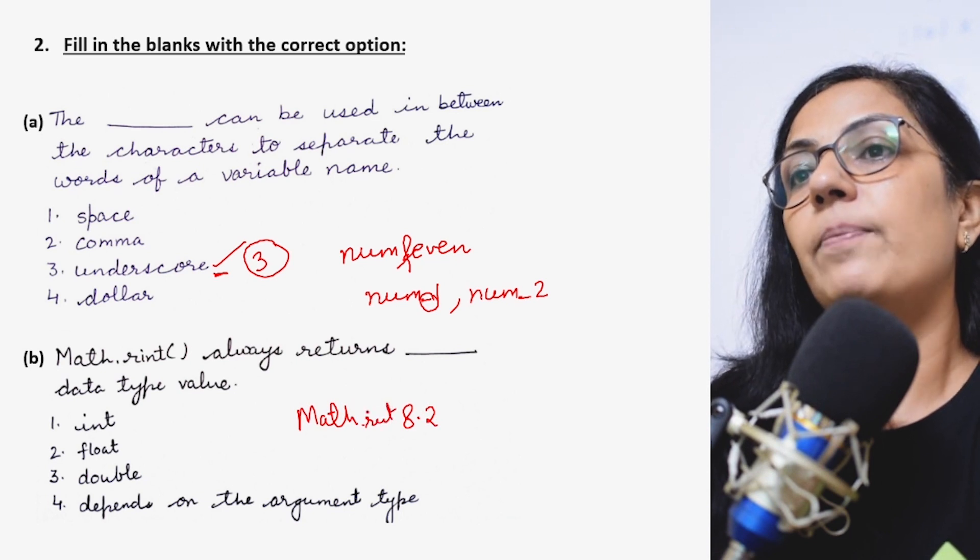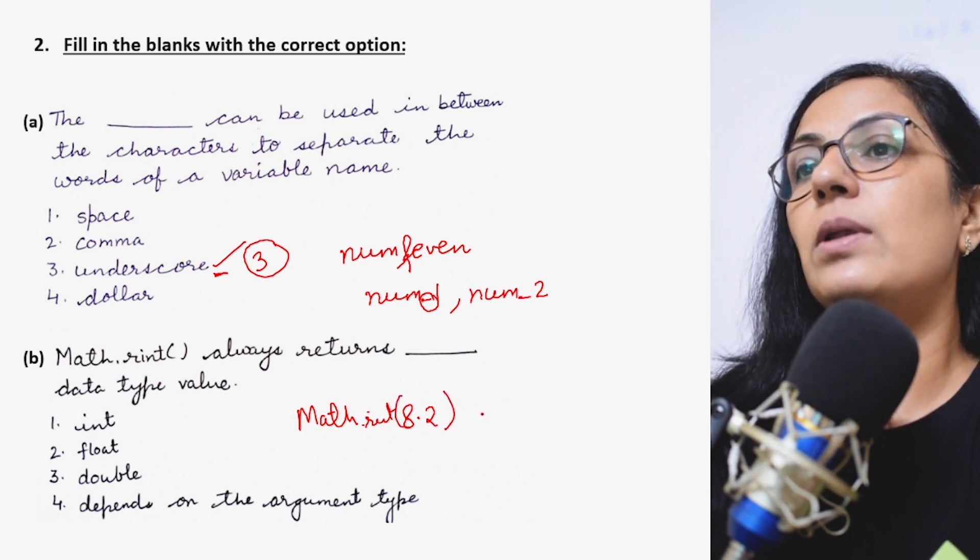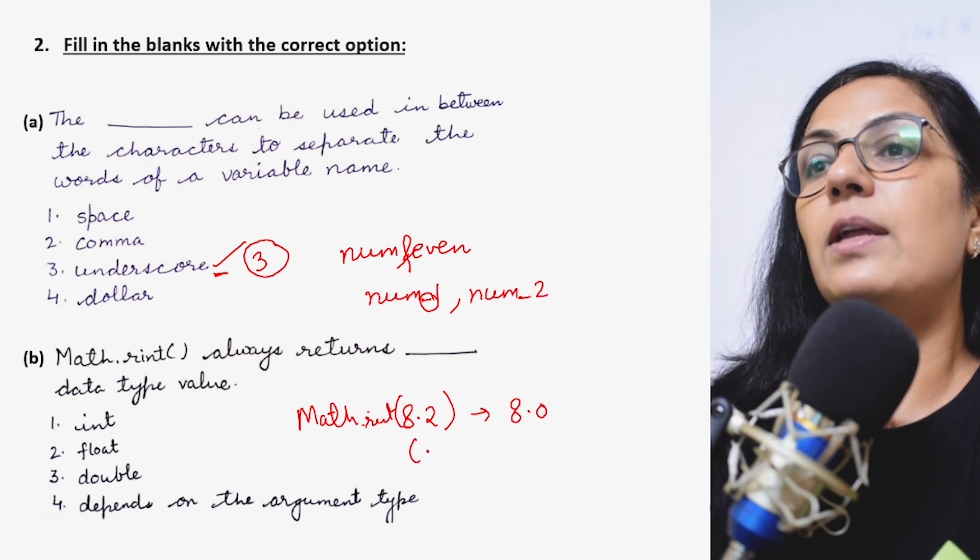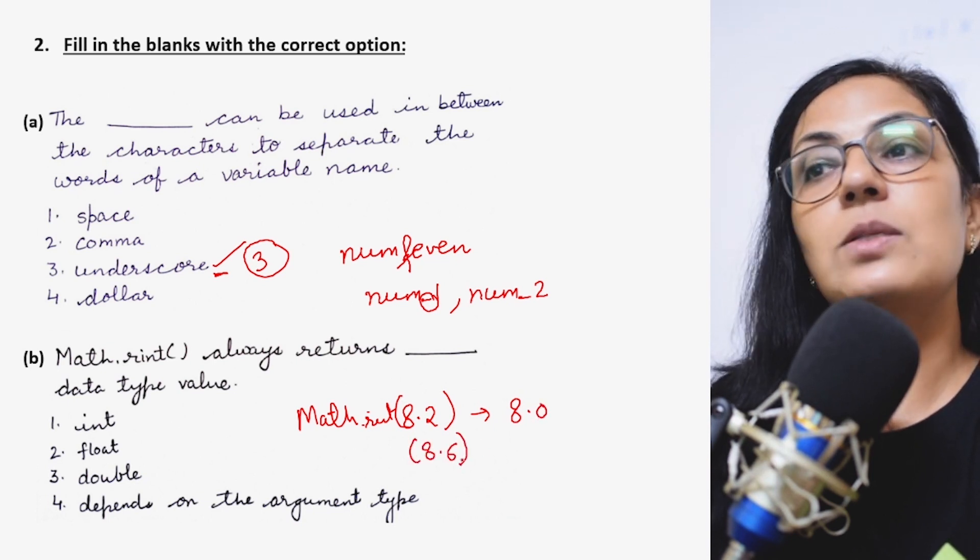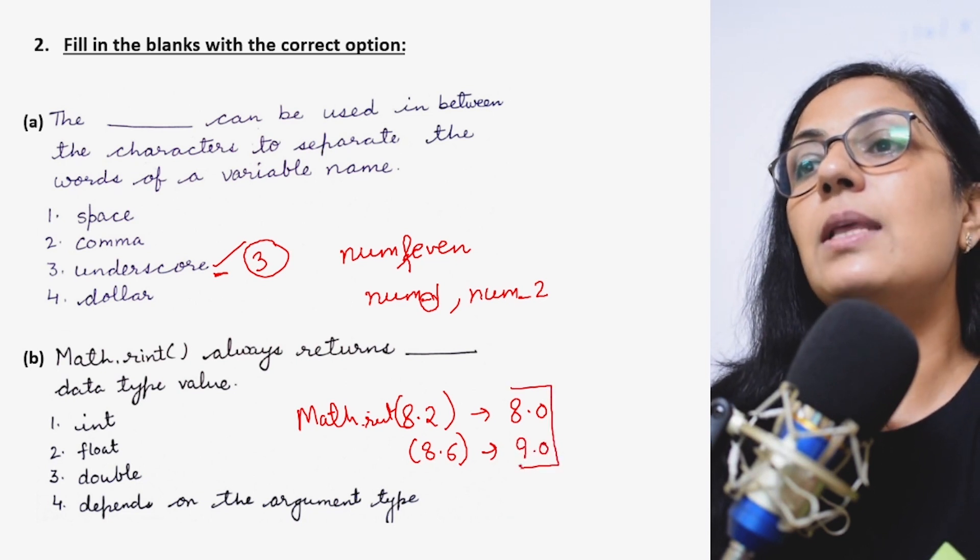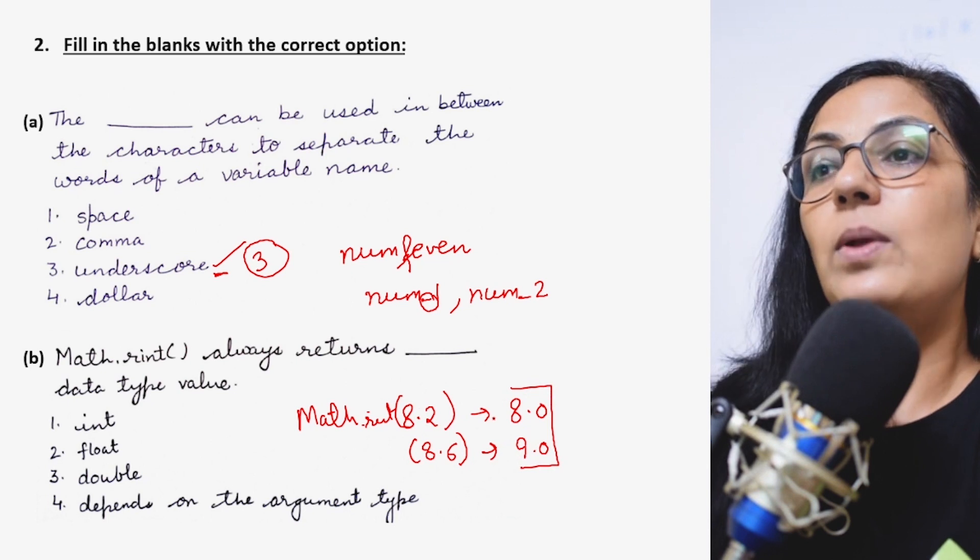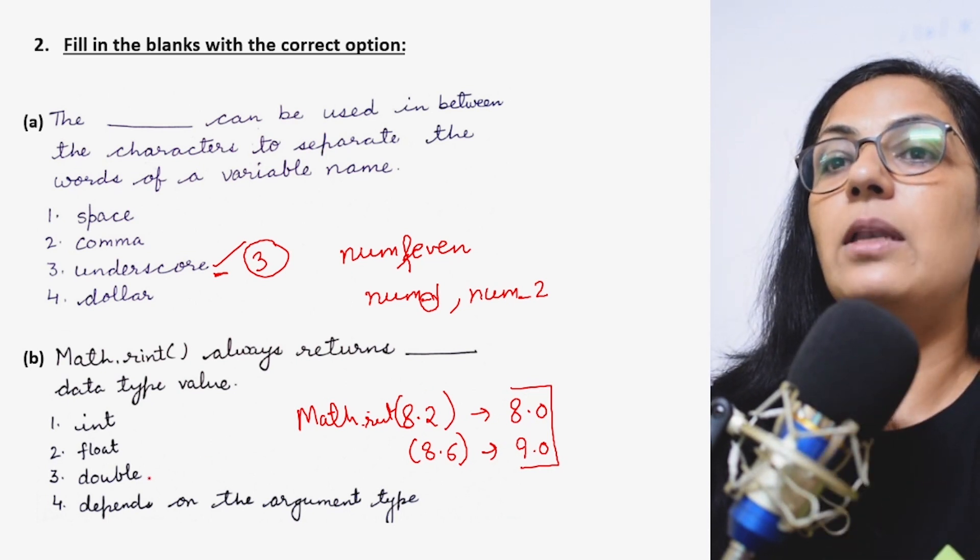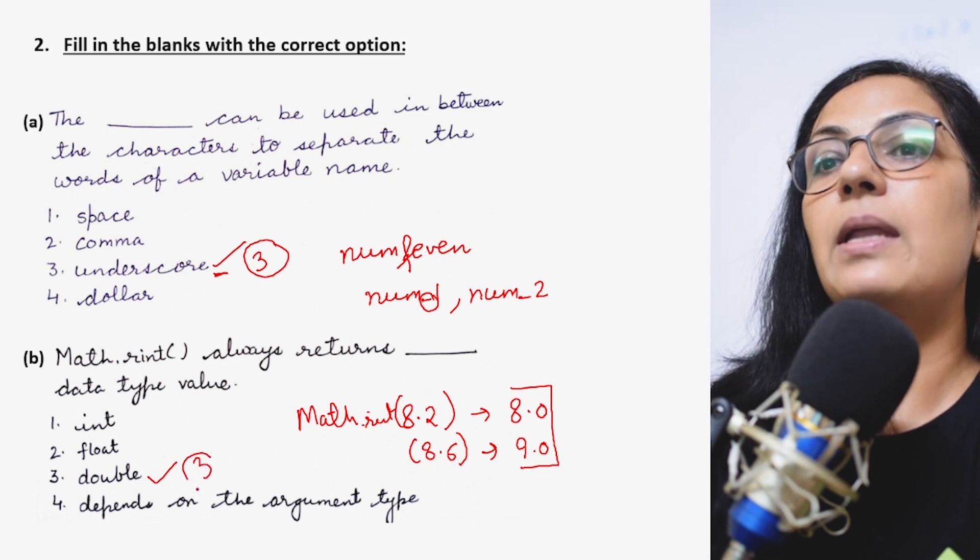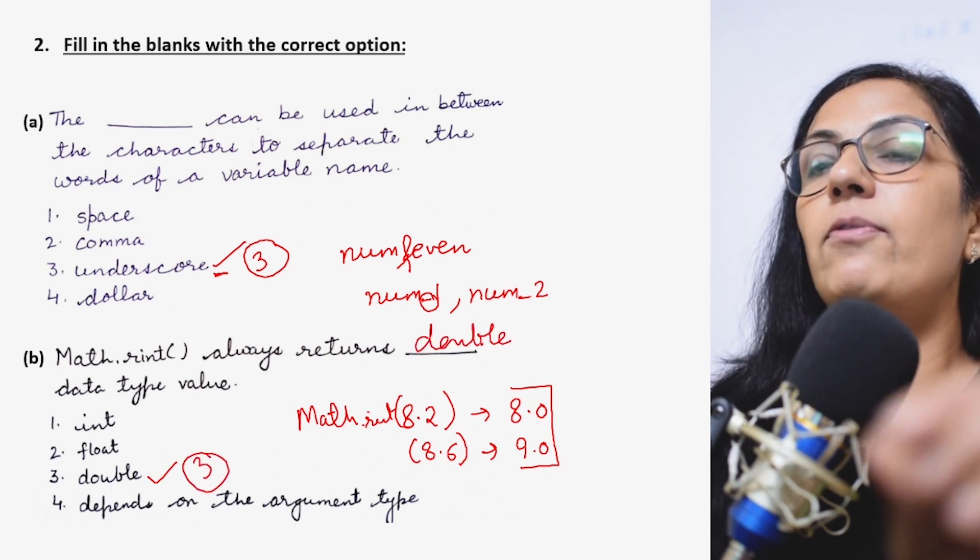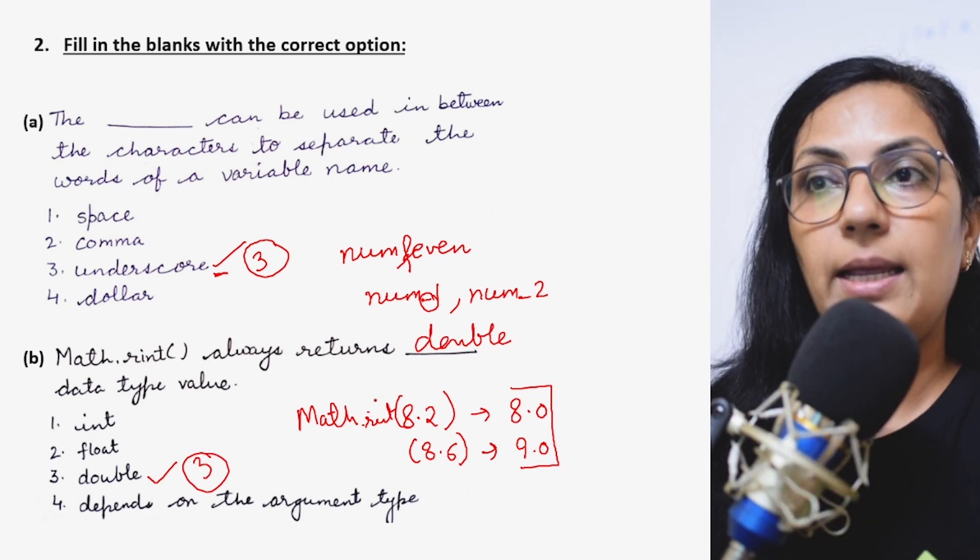It is going to return 8.0. If it is 8.6, what it is going to return? 9.0. So if you see the data type, it will always be in double type value. This has to be double type. So the correct option is double here.